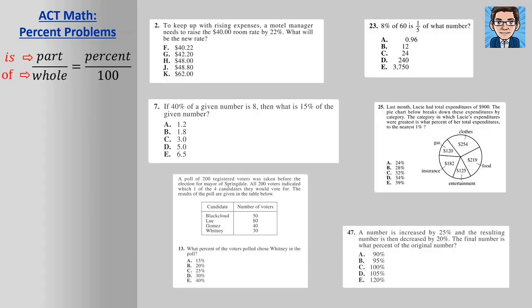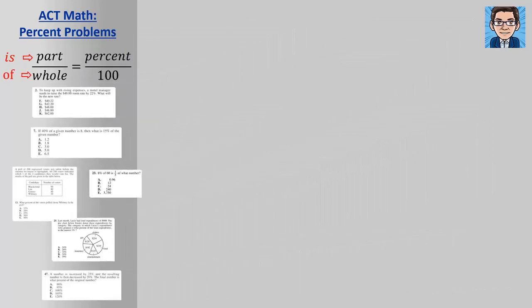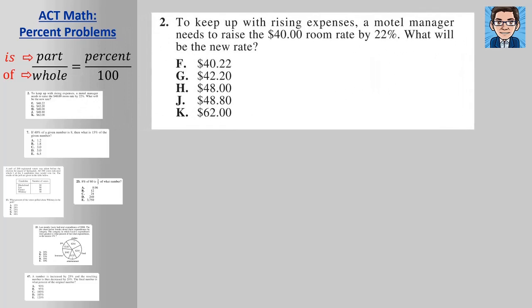Okay, let's take a look at these six sample problems involving percents. On the first problem, we've got a $40 room rate and we want to increase it by 22 percent. So we could multiply the 40 times 0.22 for 22 percent to get us what the amount is that we're going to increase. So if we multiply that out, we're going to get $8.80 is the dollar amount that we need to increase. So that's going to bring us on top of the 40, to 48.80. So that's going to be J for our answer.